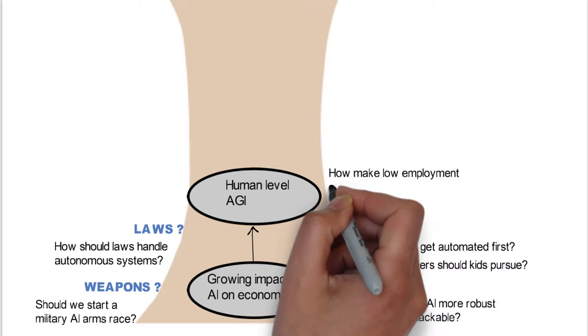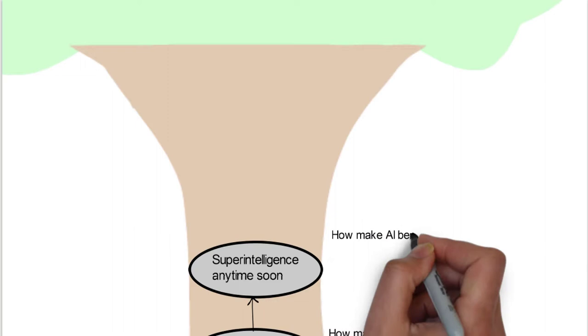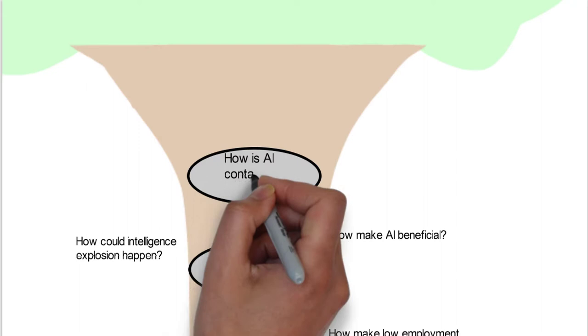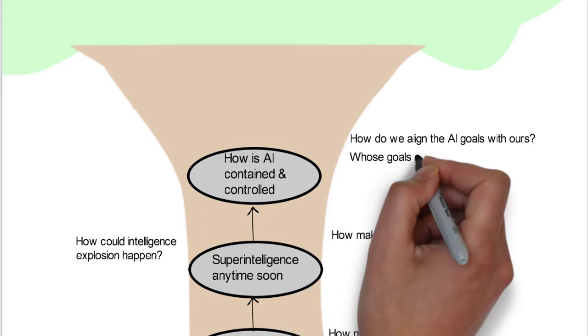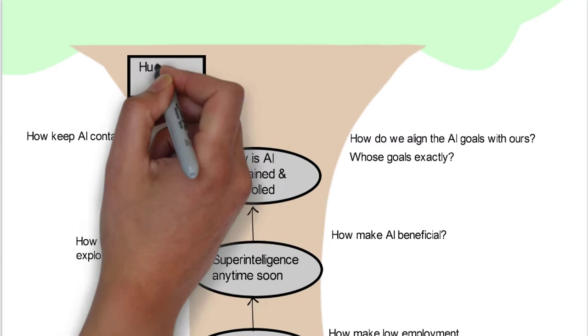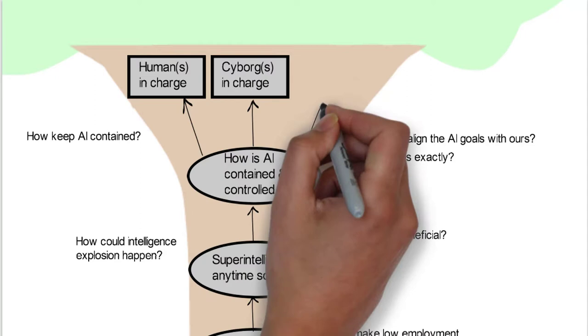Those are some of the things that he looks at. Then he gets into the human level AGI, which is how can we make low employment work for us? The other is superintelligence anytime soon. How can we make intelligence beneficial? And how can intelligence explosion happen? How is this possible? How is AI contained and controlled? How do we align the AI with ours? And whose goals do we align it with? And how do we keep AI contained?